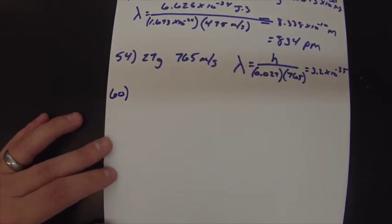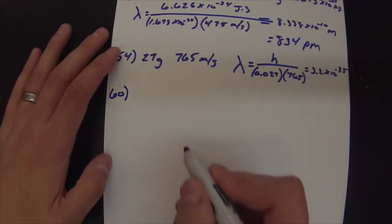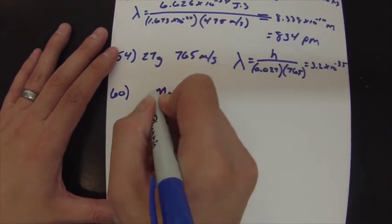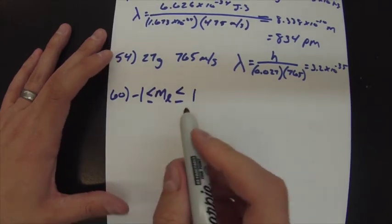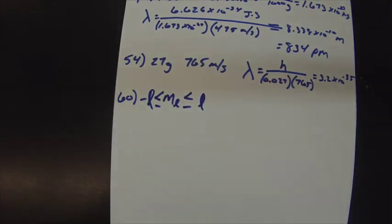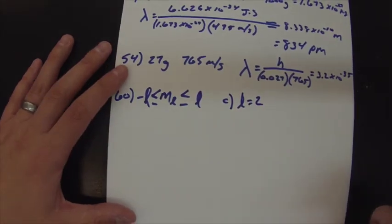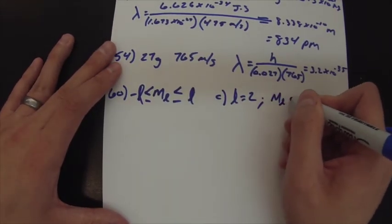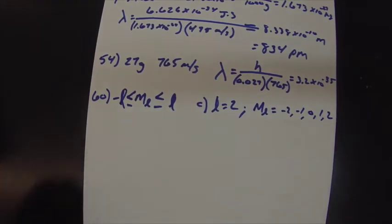Number 60 asks for the possible values of M_L for each value of L. Remember that M_L ranges from negative L to positive L. For part C, L = 2, so M_L equals negative 2, negative 1, 0, 1, and 2. Super simple.